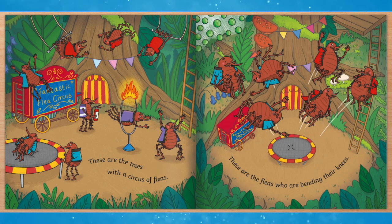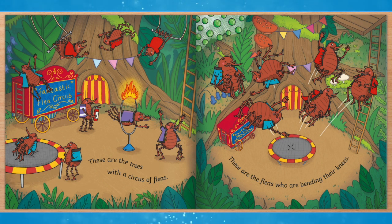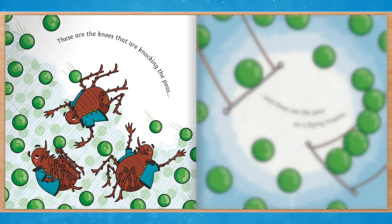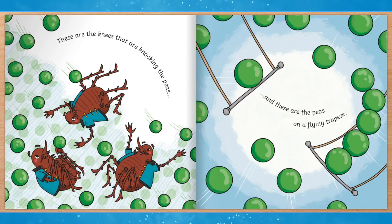These are the fleas who are bending their knees. Can you spot the peas? What do you think might happen next? These are the knees that are knocking the peas. What is happening to the fleas? And these are the peas on a flying trapeze.